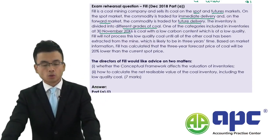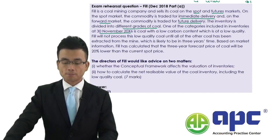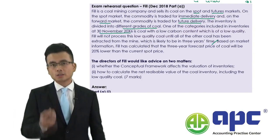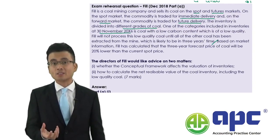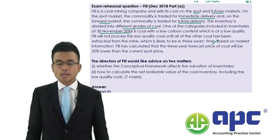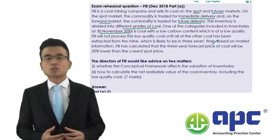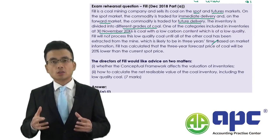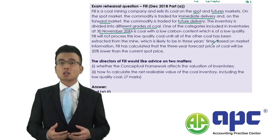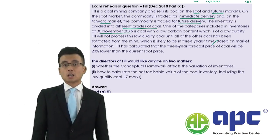Field will not process this low-quality coal until all other coal has been extracted from the mine — likely in three years' time. This means those low-carbon-content coals may suffer a loss, and whether they can be sold depends on future conditions in three years. We must question whether the contract will be executed. If the coal contract is an onerous contract — a loss-making contract — according to IAS No. 37 Provisions, Contingent Liabilities and Contingent Assets, it should be accounted for by recognising a provision liability.